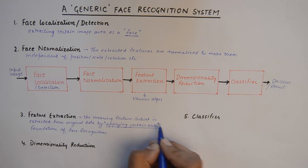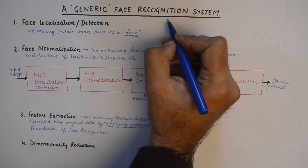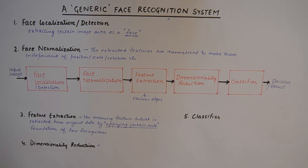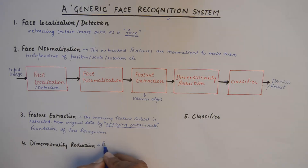The next block is dimensionality reduction. The 'applying certain rules' keyword is what implements various algorithms — face recognition algorithms like geometry-based algorithms and template-based algorithms. Depending on those algorithms, the entire system is classified and evolved. Dimensionality reduction can be thought of as a feature selection procedure.